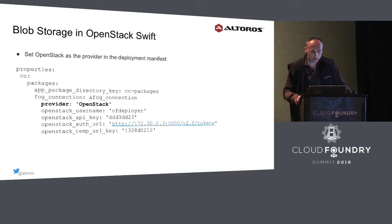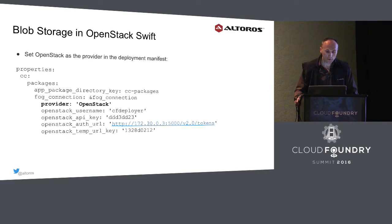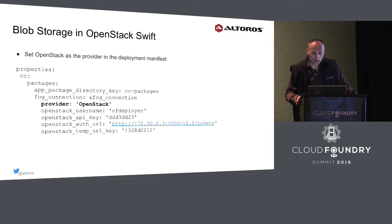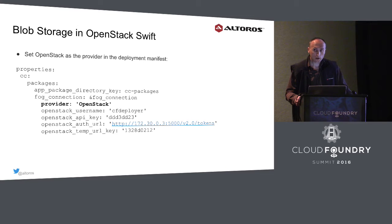As the last example of configuring HA support for a non-HA component in Cloud Foundry, I provided a sample deployment manifest to set OpenStack Swift as the provider for BlobStore. We have to define credentials and a URL to connect to OpenStack and also set a temporary key. The temporary key is a value that must be unique for every Cloud Foundry deployment — for example, if there are two installations of Cloud Foundry on one OpenStack, each needs its own unique key.